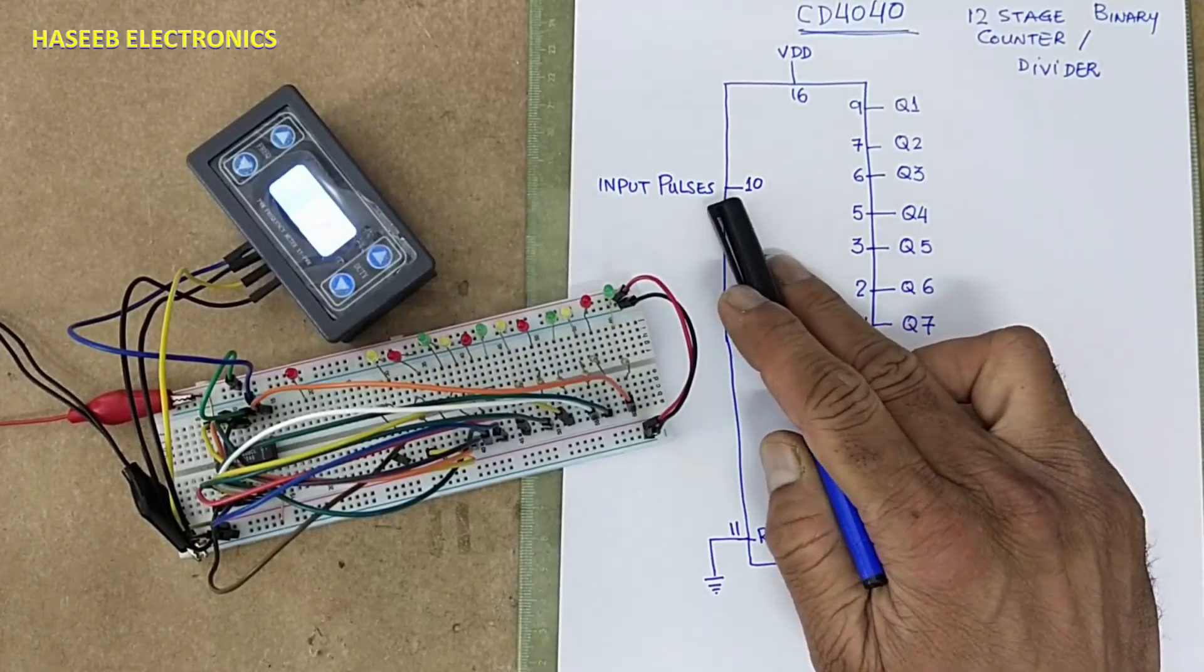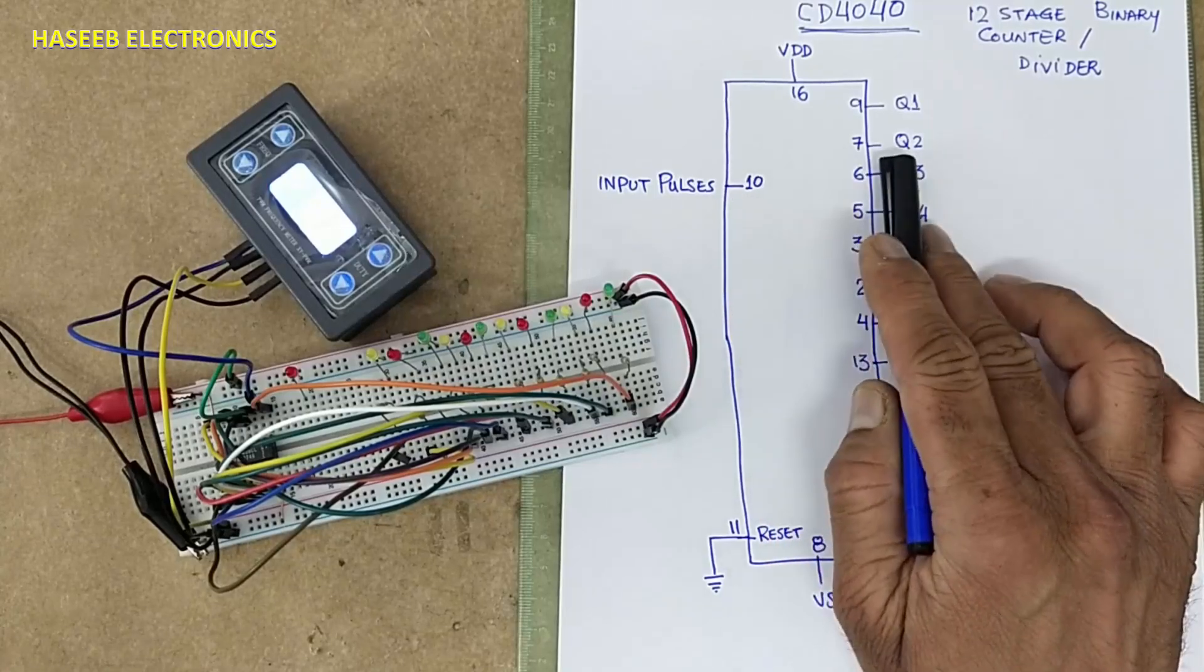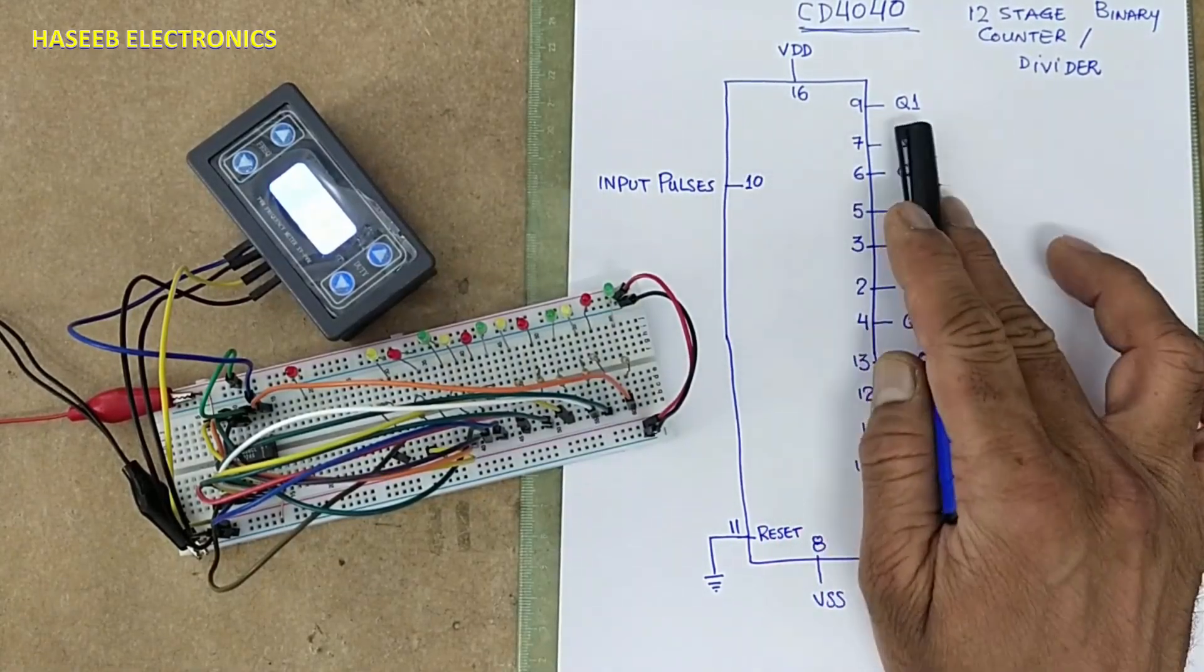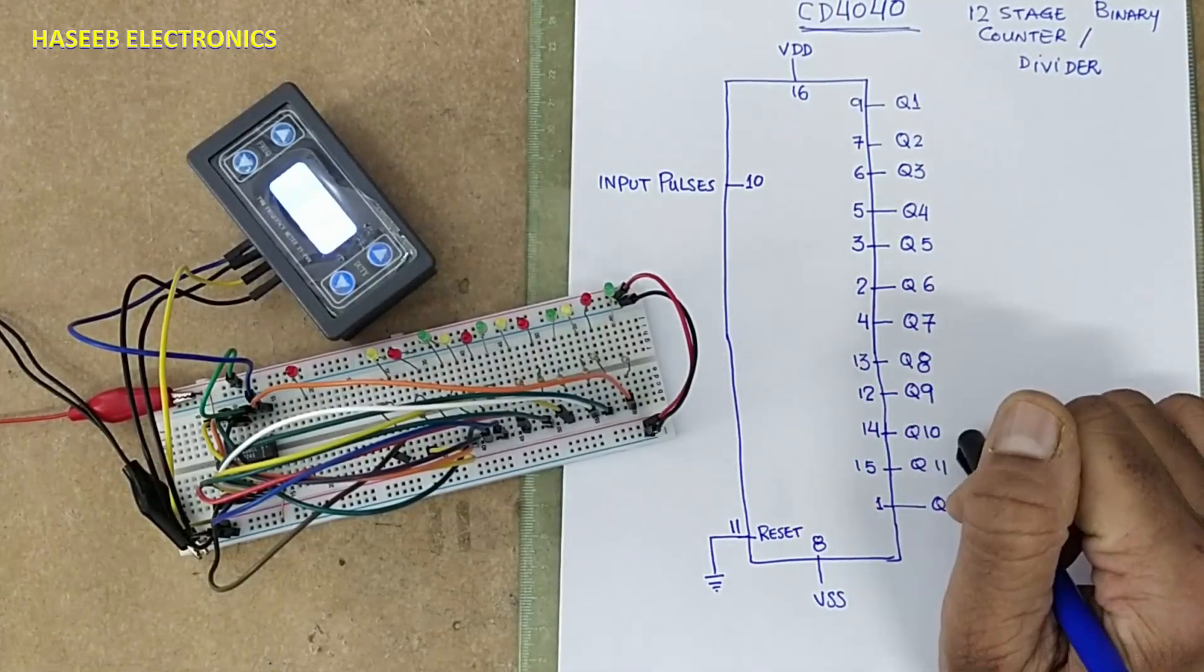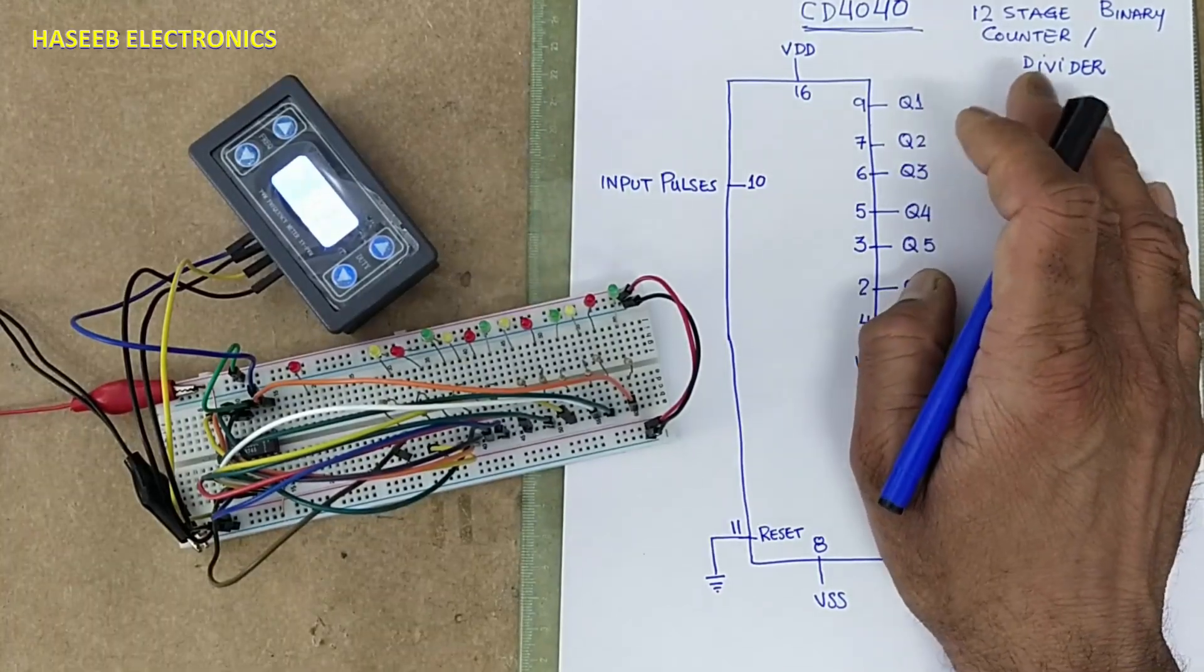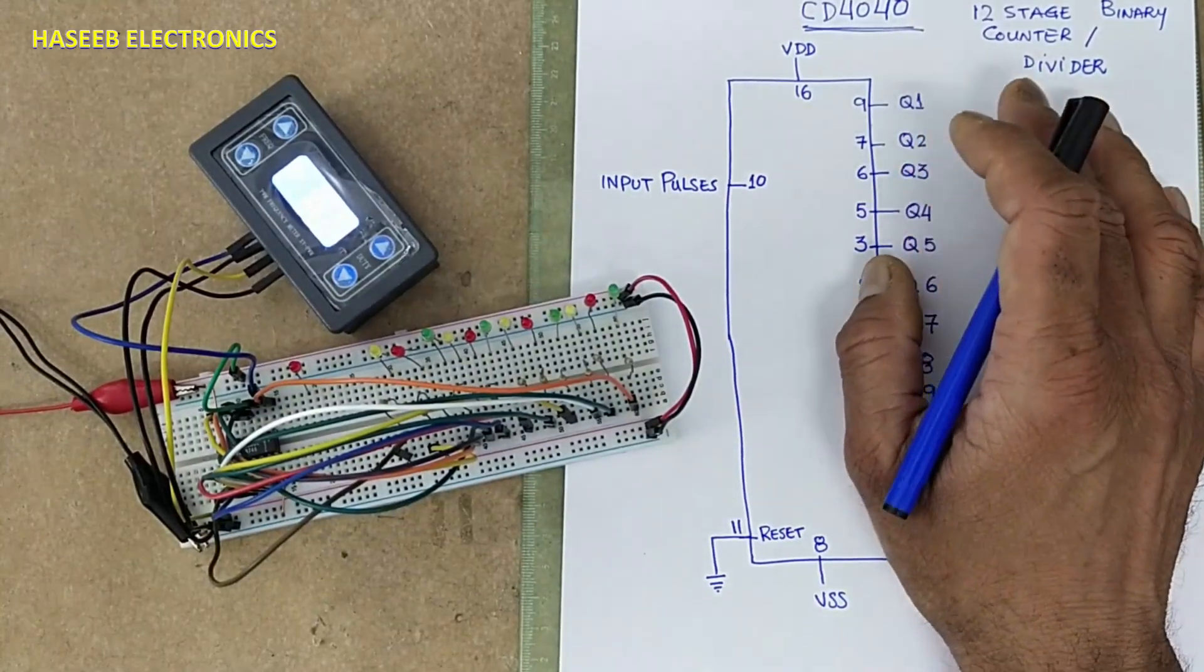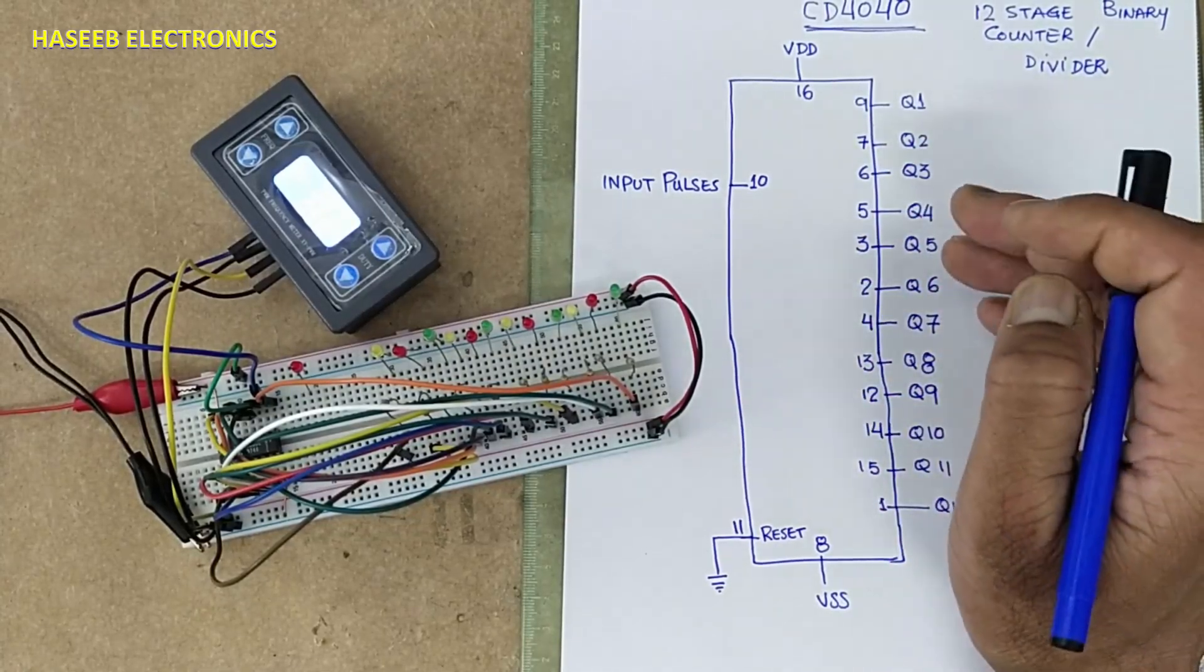At pin number 10 we apply any pulses which we are going to count. It will count these pulses into binary counting, binary format. It is ripple carry binary counter. It is also used as a frequency divider and it is also used to create delay time in different digital circuits.